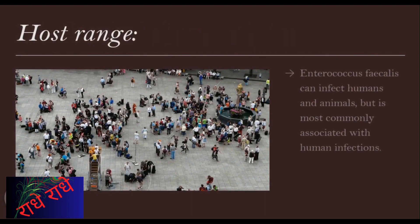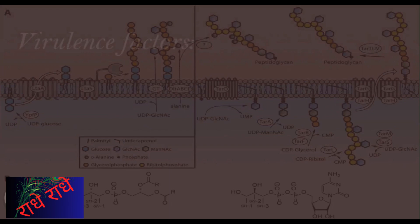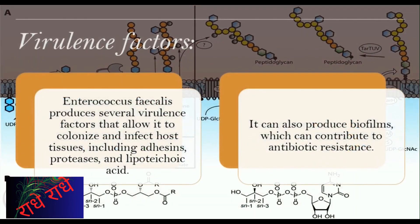Enterococcus faecalis is a gram-positive bacteria that can infect both humans and animals. It is most commonly associated with human infections, leading to diseases such as urinary tract infections, bacteremia, and endocarditis. To avoid infection, it is necessary to practice good hygiene, as well as obtaining timely diagnosis and treatment. Enterococcus faecalis is an opportunistic bacteria possessing a range of virulence factors, such as adhesins, proteases, and lipoteichoic acid, allowing it to colonize host tissues and cause infection. Additionally, it can also produce biofilms with increased resistance to antibiotics.